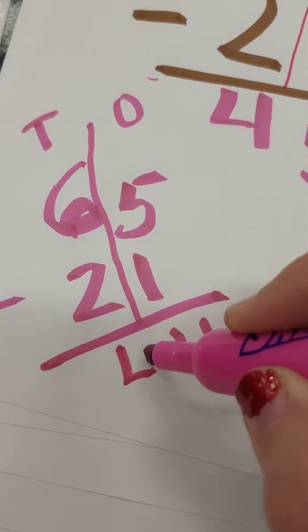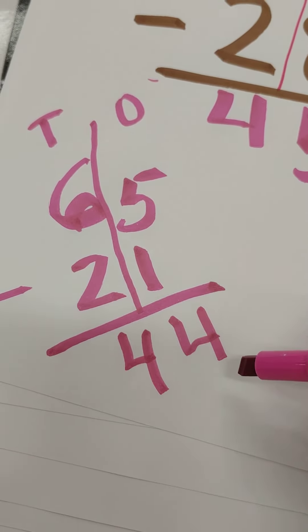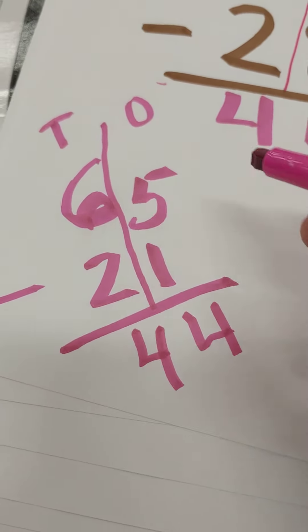6 minus 2 is 4 again. So we end up with 44. That one we did not have to regroup.